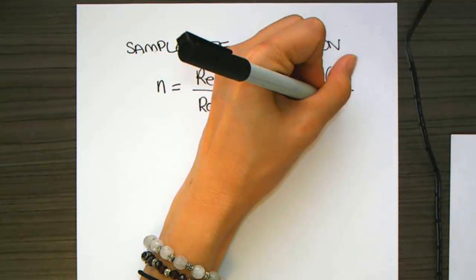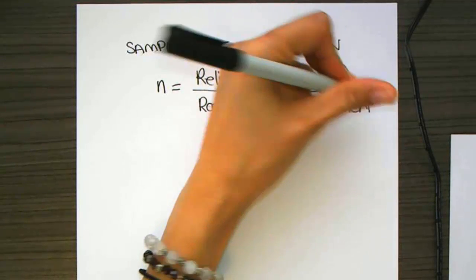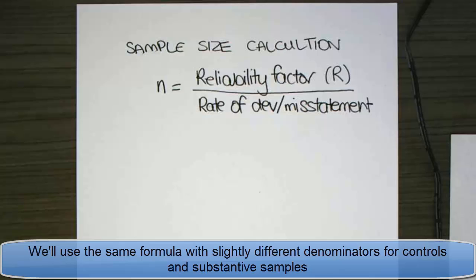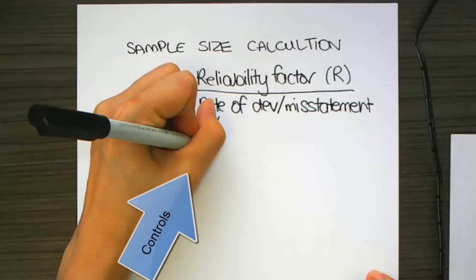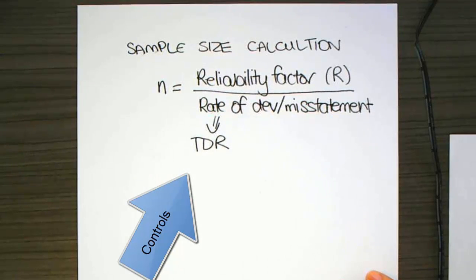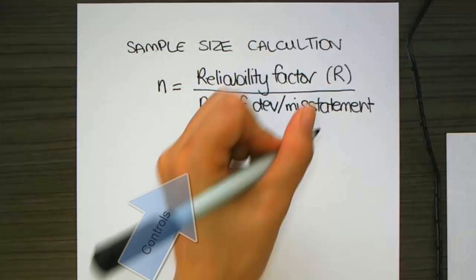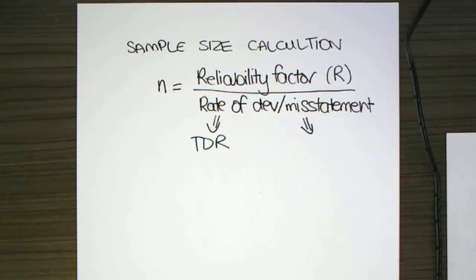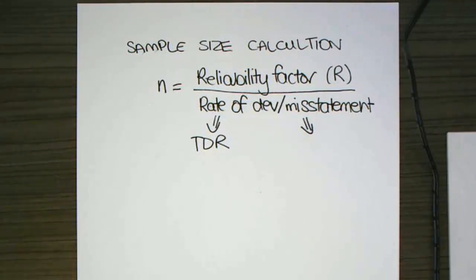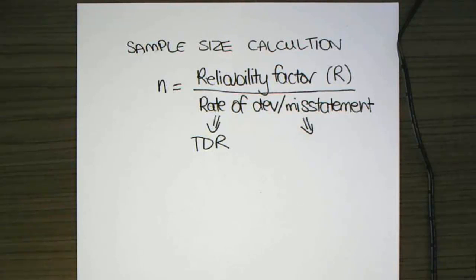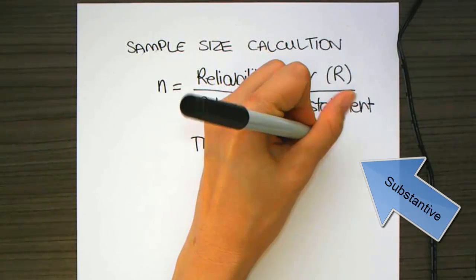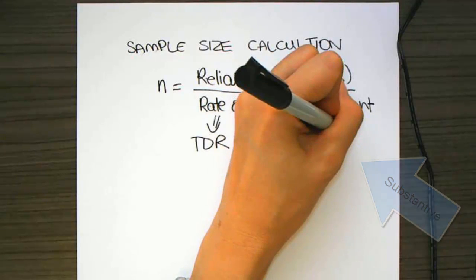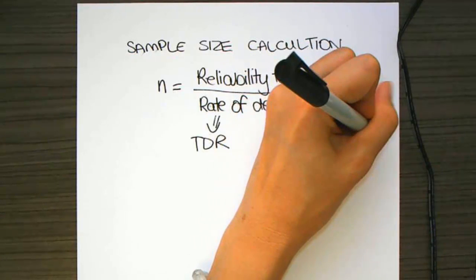Now, in control testing, we use the term TDR, tolerable rate of deviation, tolerable deviation rate. And when we're substantive testing, we use basically the materiality for the account, which is tolerable misstatement divided by the book value of the account.